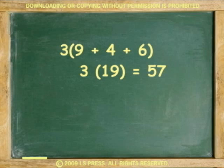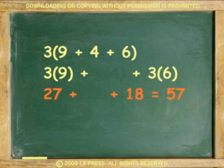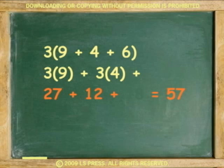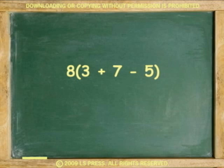Let's see this other example. Add first, then multiply. 9 plus 4 plus 6 equals 19 times 3 equals 57. Multiply first, then add. 3 times 9 plus 3 times 4 plus 3 times 6 equals 27 plus 12 plus 18 equals 57.